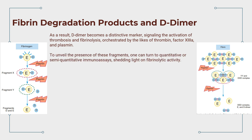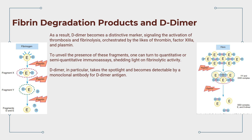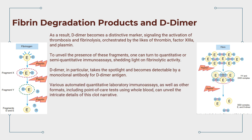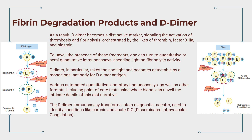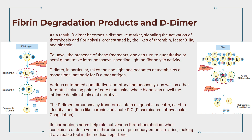To unveil the presence of these fragments, one can turn to quantitative or semi-quantitative immunoassays, shedding light on fibrinolytic activity. D-dimer in particular is detectable by a monoclonal antibody for D-dimer antigen. Various automated quantitative laboratory immunoassays, as well as point-of-care tests using whole blood, can provide details of clot formation and dissolution. The D-dimer immunoassay is used to identify conditions like chronic and acute DIC and to rule out venous thromboembolism when suspicions of deep venous thrombosis or pulmonary embolism arise.